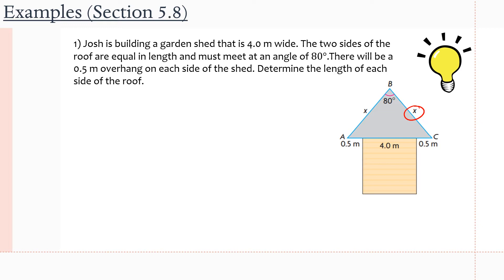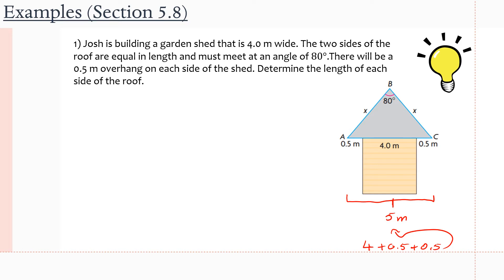We can see that we clearly have a triangle here, outlined in blue, so we're going to be working with that triangle. We have to notice that the four meters noted from here to here are just the square piece of the shed, and there's a 0.5 meter overhang of the roof on each side. So the bottom length of this triangle is going to be 4 + 0.5 + 0.5 = 5 meters.